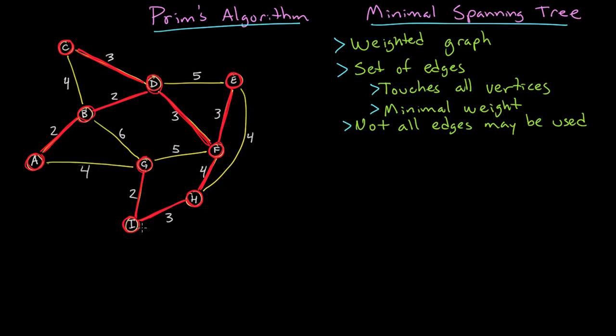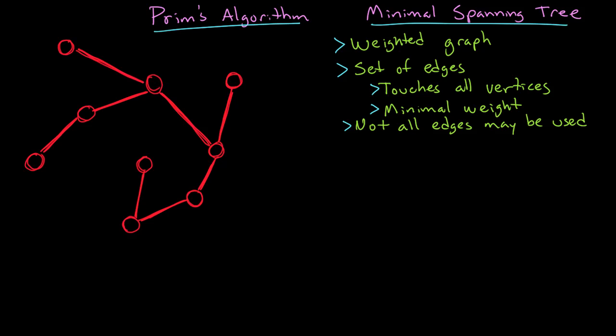And the last one to pick is going to be this one going to E from F. At this point, all of the nodes have been visited, so that means we now have a minimal spanning tree. I should be able to hide the original graph, and you can see that this minimal spanning tree doesn't use all of the edges. Nevertheless, it does visit all of the vertices.